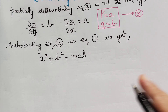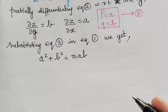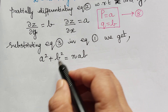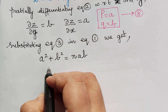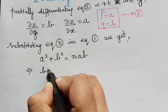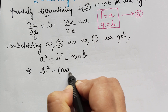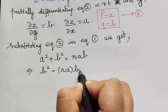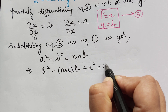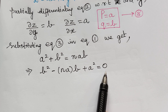Now from this we have to solve for b. Taking n·ab to the left, we can rewrite this equation as b² − n·ab + a² = 0. So this is a quadratic equation in b.